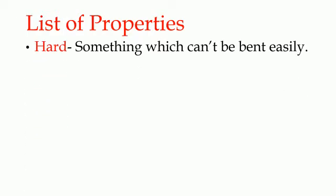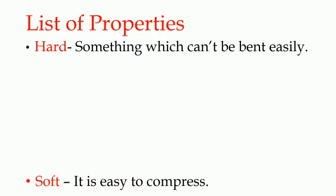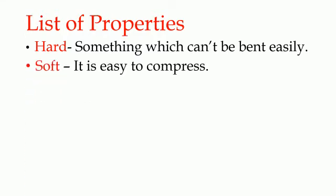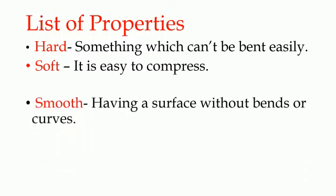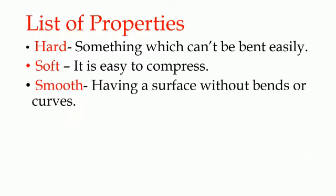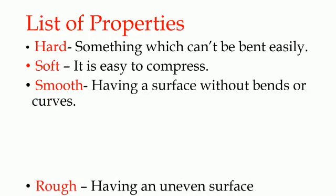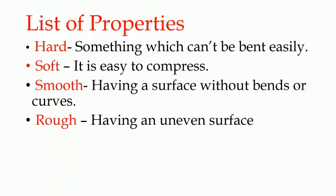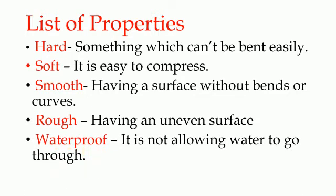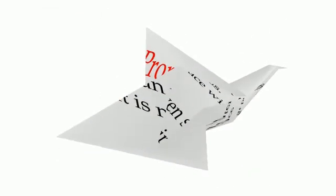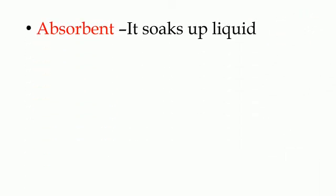Here is a list of properties. Hard: something which can't be bent easily. Soft: it is easy to compress. Smooth: having a surface without bends or curves. Rough: having an uneven surface. Waterproof: not allowing water to go through. Absorbent: it soaks up liquid.